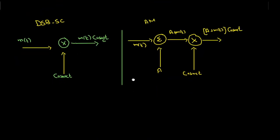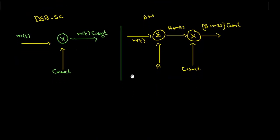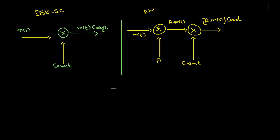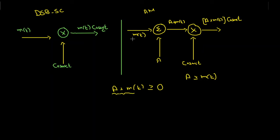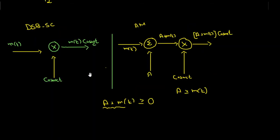There is a very important condition for detection of this amplitude modulation with carrier: the amplitude (A + m(t)) must be greater than or equal to zero, meaning A must be greater than m(t). We will see in a few minutes why this condition must be satisfied for demodulation.